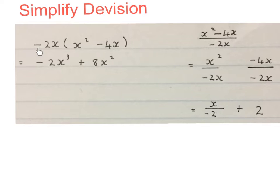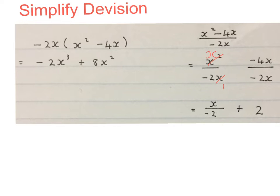The same way we multiplied, we now divide. We're going to divide minus 2X into each term at the top. To make it easier I write minus 2X underneath the first term and minus 2X underneath the second term, giving two separate sums. I simplify: plus divided by minus gives a minus, cancel the X's leaving one X. On the other side minus divided by minus gives a plus, 2 goes in once and into 4 twice, and the X's cancel. My final answer is X over minus 2, plus 2.